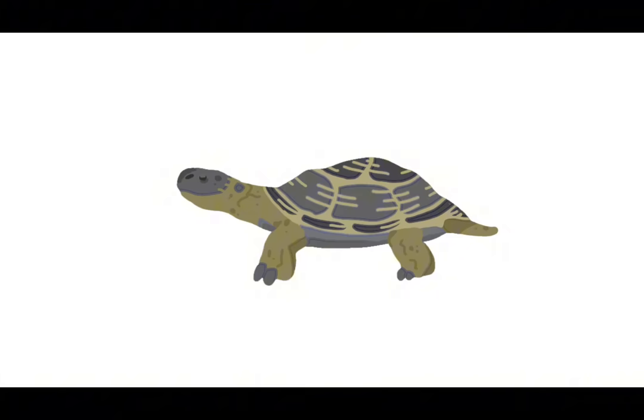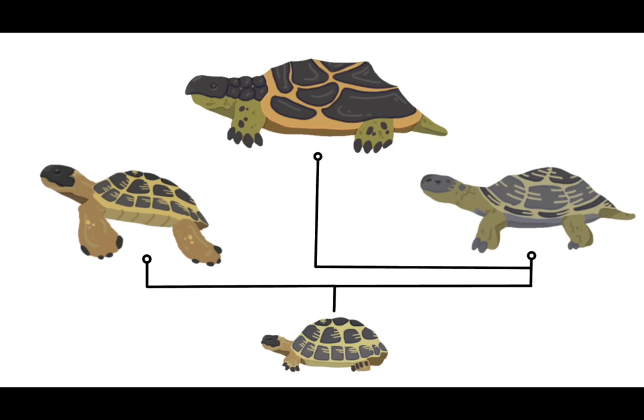Fewer predators mean these turtles can focus on mobility, so their shells start to loosen up, giving way to a branch of soft-shelled reptiles with larger forearms.